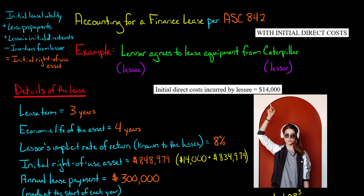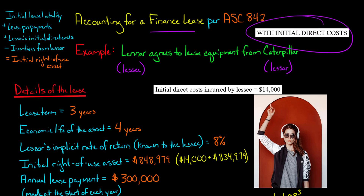In one of my last videos, I showed you how a lessee would account for a finance lease under ASC 842, which is US GAAP. But in that example, I assumed that the lessee did not incur any initial direct costs. So what I want to do in this video is go through that same example, but this time I'm going to assume that the lessee did incur initial direct costs.